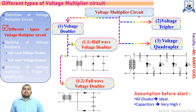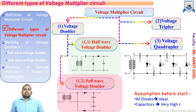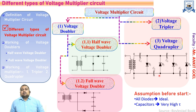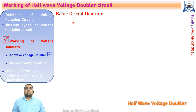Voltage multipliers are of different types: they may be classified as voltage doubler, voltage tripler, and voltage quadrupler. The voltage doubler may be further classified as the half wave voltage doubler and full wave voltage doubler, with circuit diagrams shown here. The circuit for the voltage tripler and the voltage quadrupler is common, as shown here. The assumption taken for understanding the working of the voltage multiplier is that all diodes used are ideal in nature and the capacitors have a very high time constant, so they will retain charge for the required number of cycles.